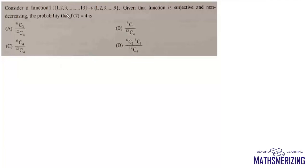Consider a function f defined from the set {1,2,3,...,13} to {1,2,3,...,9}. Given that this function is surjective and non-decreasing, find the probability that f(7) equals 4. We have this set containing 13 elements and here we have 9 elements from 1,2,3,4 up to 9.